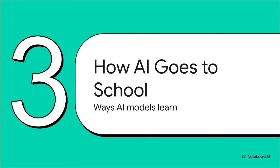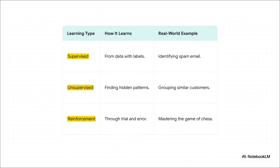So we have the brain, the architecture, but how does it actually learn? Let's look at the different teaching methods we use to train an AI model. An AI can learn in three main ways. In supervised learning, we give it data that's already labeled with the right answers — it's like studying with a textbook and an answer key. With unsupervised learning, we give it a pile of data and it has to find the hidden patterns on its own, kind of like an explorer. And then there's reinforcement learning, where it learns through trial and error, getting rewards for good moves, just like a player learning to master a game.